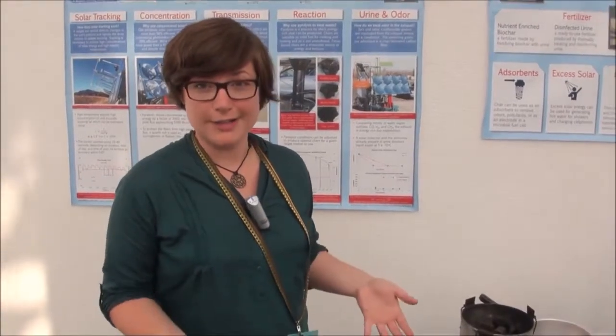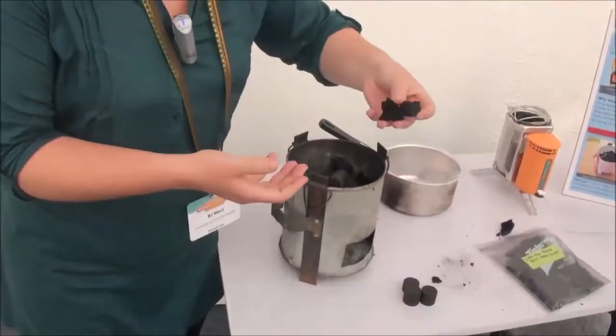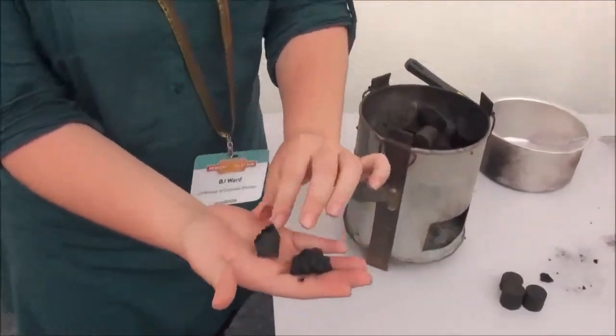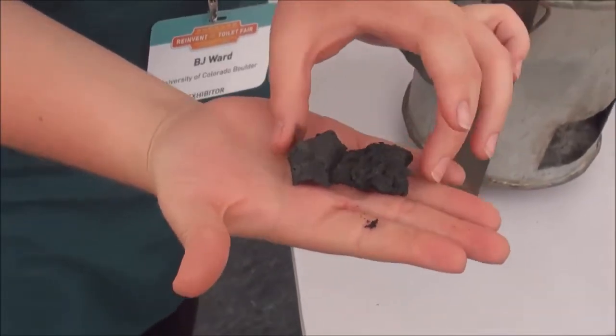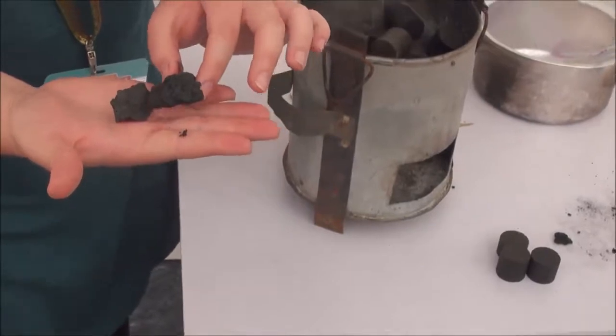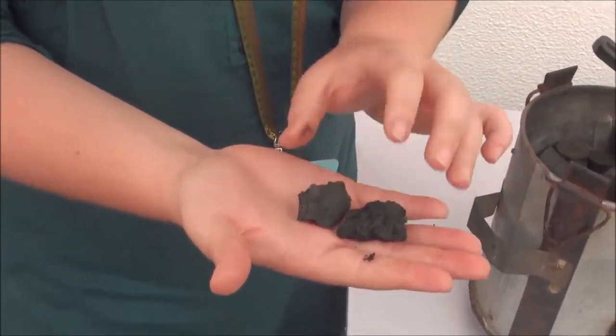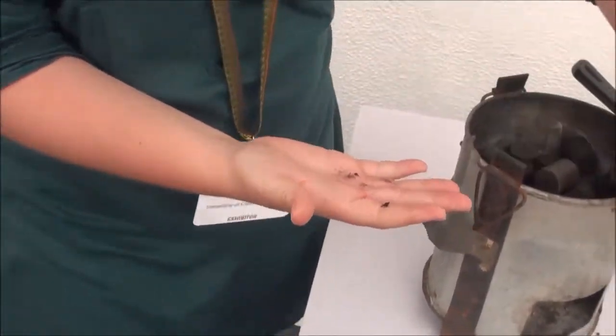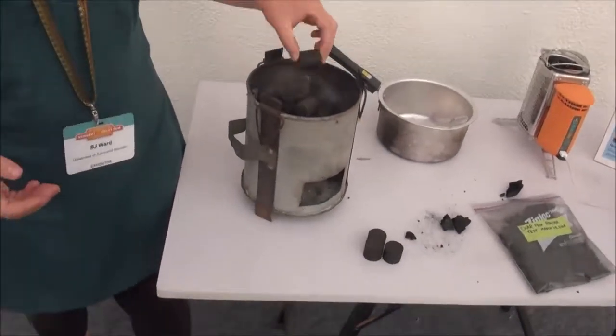So the Solchar sanitation process generates char as a useful byproduct, and this is some char that we've made at the fair. So we make it at about 300 Celsius in limited oxygen. We've been investigating using it both as an agricultural amendment because it has good nutrients, nitrogen, for adding to soil. And then we've also been looking at its energy content potentially for using it as a solid fuel.